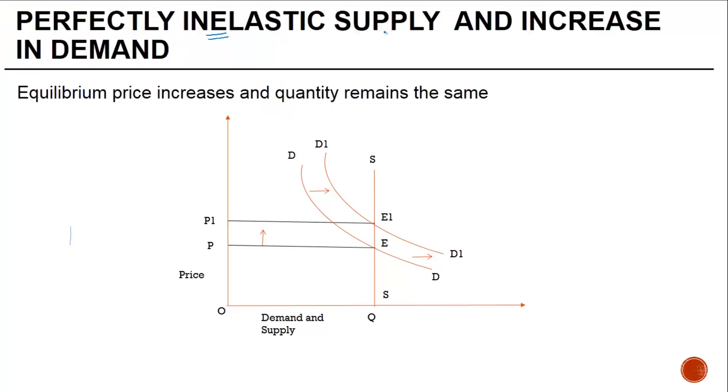In case of a perfectly inelastic supply and an increase in demand, if you see in this case your supply curve is S which is staying as it is. Whether the price is here or here, it doesn't make any difference - the supply remains the same. In this case, there is a perfectly inelastic supply and an increase in demand.